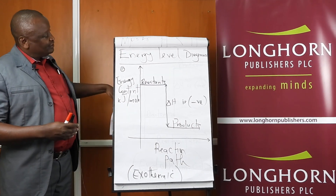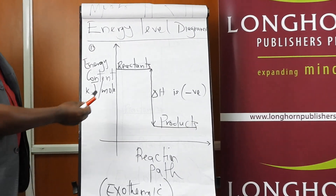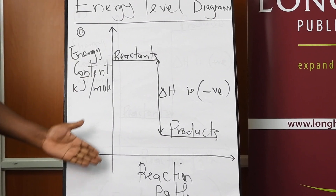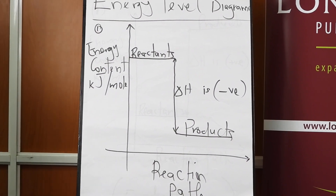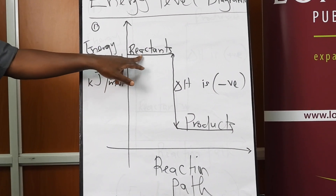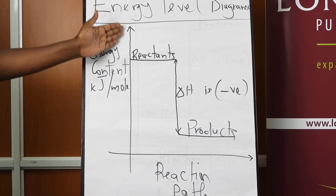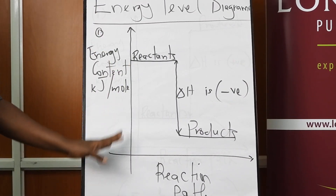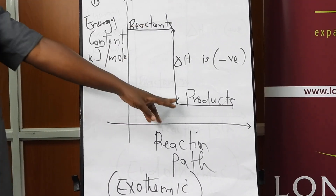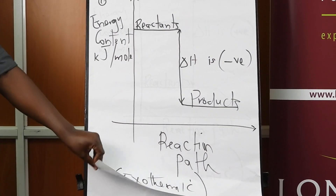The same information can be illustrated on what we call an energy level diagram, where on the y-axis we have the energy content of either reactants or products, and on the x-axis we have the reaction path. If the reactants have higher energy than the products, meaning energy has been lost to the environment, this is the energy level diagram for an exothermic reaction, where delta H will have a negative sign.